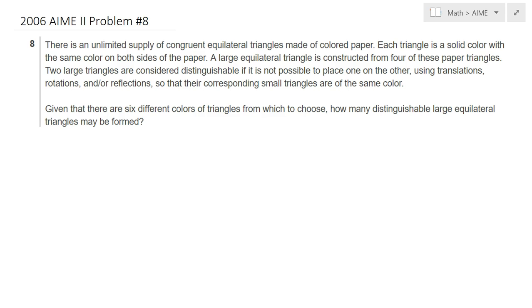There is an unlimited supply of congruent equilateral triangles made of colored paper. Each triangle is a solid color with the same color on both sides of the paper. A large equilateral triangle is constructed from four of these paper triangles. We have small triangles, an infinite supply of them, and both sides of the triangle are colored the same color.